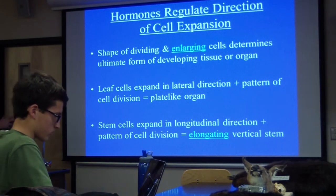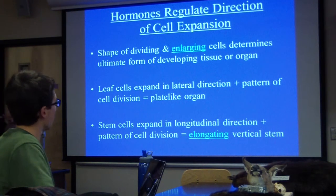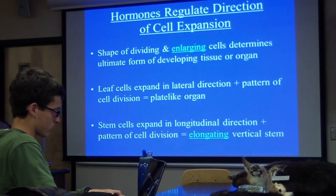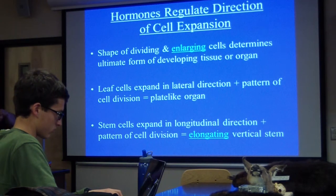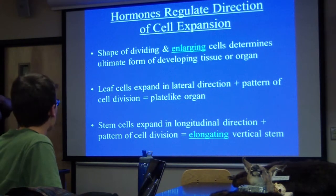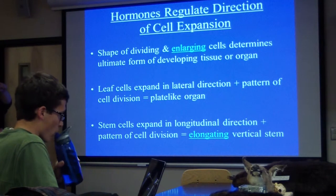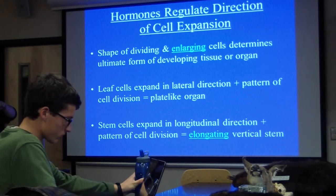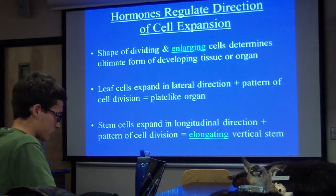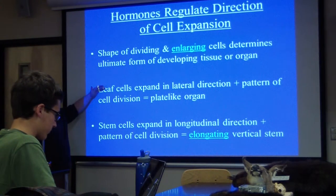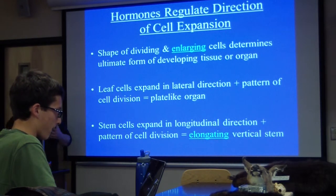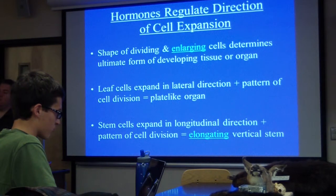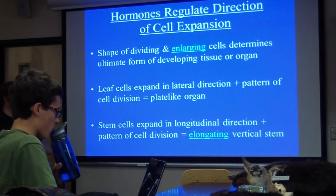Leaf cells expand in a lateral direction — they expand like this — and so they make leaves, which are plate-like organs. Whereas stem cells expand in a longitudinal direction, which gives them the shape of an elongated vertical stem. So the direction of both cell division and cell expansion impacts the final shape of the cell and therefore the final shape of the organs those cells are found in. Direction is important.